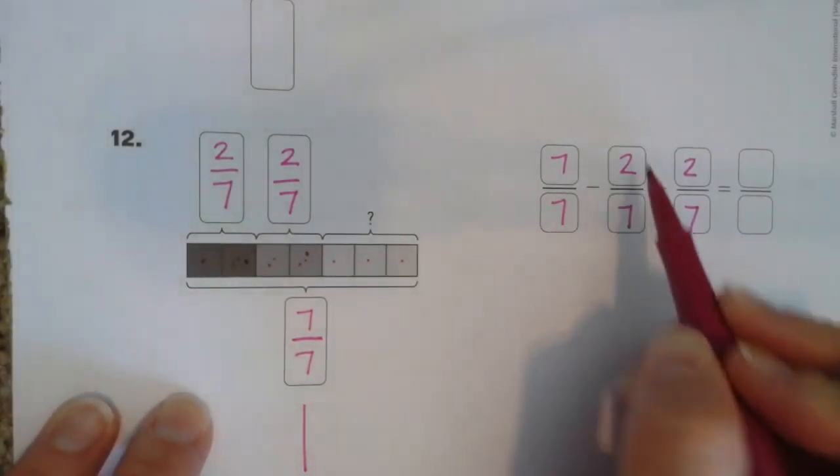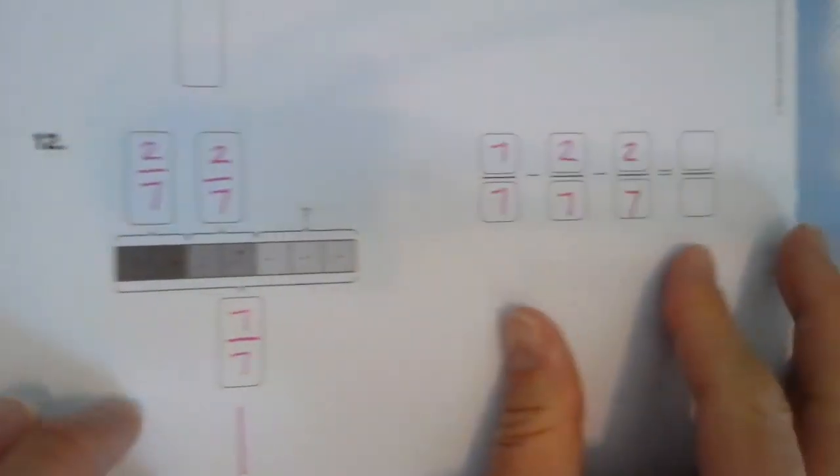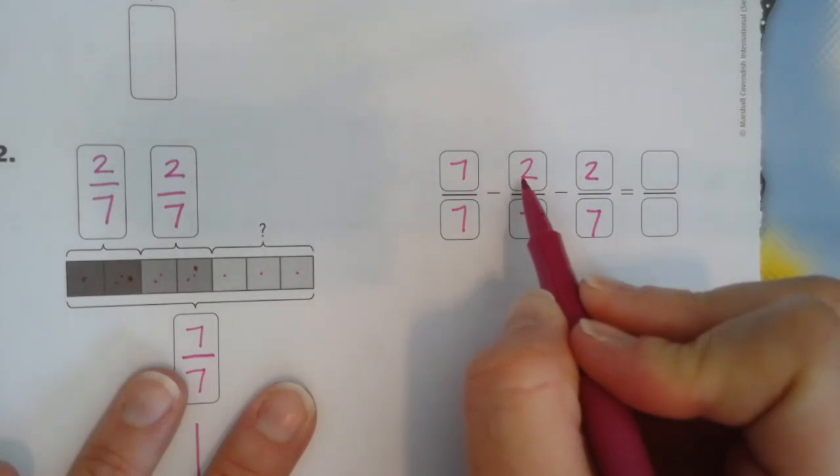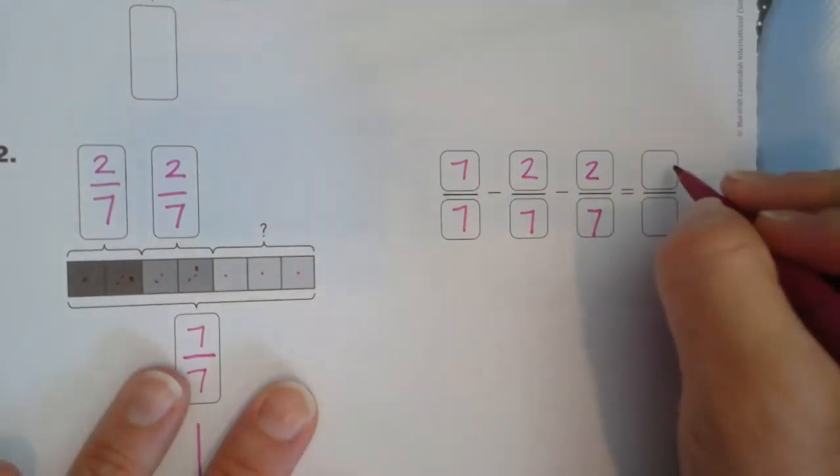7 sevenths, minus 2 sevenths, minus 2 sevenths. And we're going to see how many we have left. So, 7 minus 2 is 5. And then take 2 more away, and that's 3.